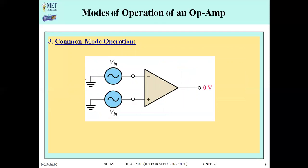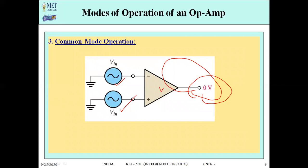The third one is common mode operation. In common mode operation, you provide voltage to both terminals, but the same voltage is applied to both. For example, if you provide 2V on the inverting terminal, you also provide 2V on the non-inverting terminal. When the same voltage is provided to both terminals, the OPAM is in common mode operation. Ideally, the output will be 0, because the OPAM amplifies the difference of two input signals and rejects common signals. Since the difference is 0, the output is 0.